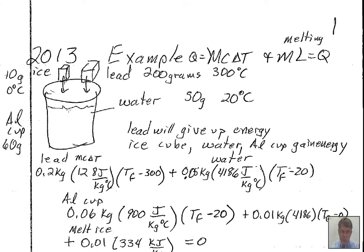We can describe these energy calculations using Q equals MC delta T for situations where temperature is changing — for the lead, the water, and the aluminum cup. We'll also have to include a term for melting the ice: the mass of the ice times the latent heat of fusion. After the ice is melted, that water will warm up, so there'll be a Q equals MC delta T term for the water that used to be ice, and another for the water originally in the cup.